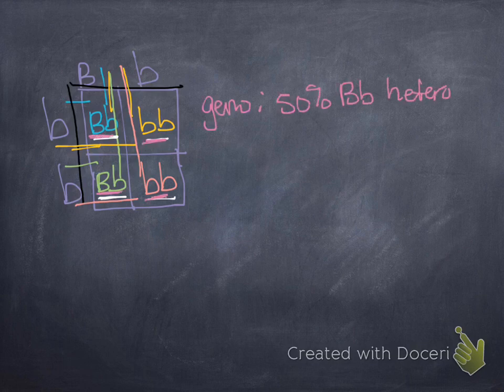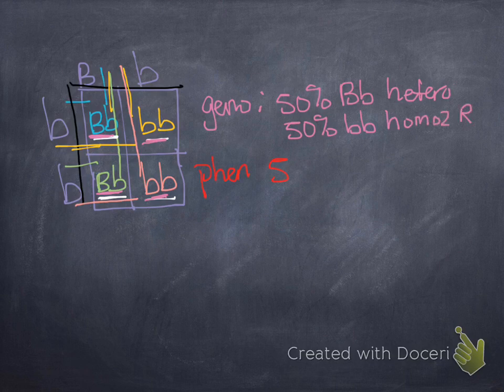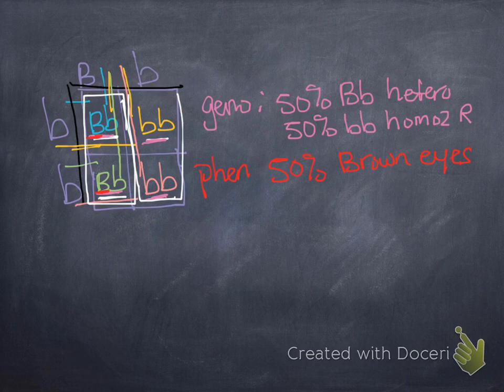So our genotype is 50% big B, little b, which is heterozygous. And 50% little b, little b, which is homozygous. So here's where we get the first 50%. Here's where we got the second 50%.